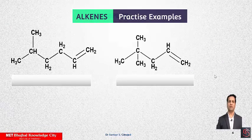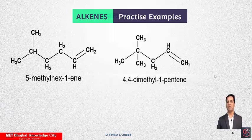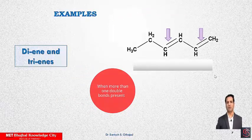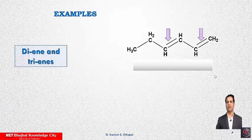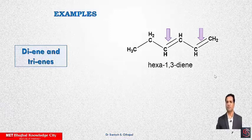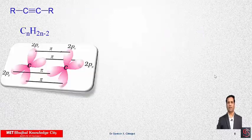Now we will see two more examples. The name of the second compound is 4,4-dimethyl-1-pentene — two methyl groups are present on the fourth carbon. Sometimes a compound may contain two or three double bonds. If two double bonds are present, the suffix '-diene' is used; if three, '-triene', and so on. In the next example, the parent chain contains six carbons, so the prefix is 'hex', and the double bonds are at positions 1 and 3, giving the name hex-1,3-diene, indicating two double bonds.